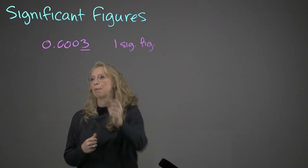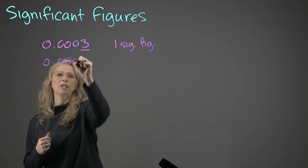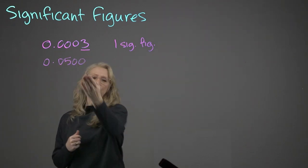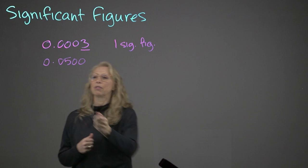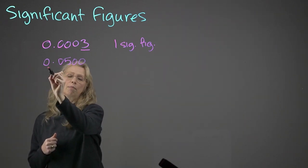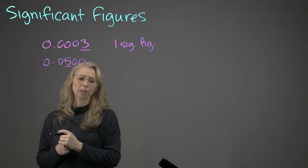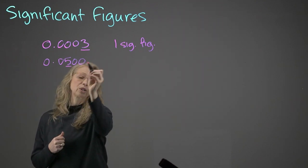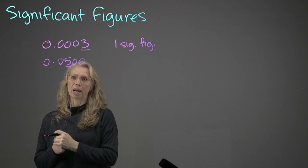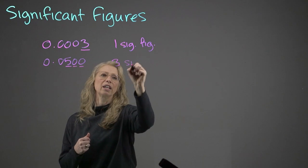What about another example? 0.0500. Now we have leading zeros and we have trailing zeros. The leading zeros, again, they don't count, and we move along across the number until we get to our first non-zero number, and then we actually start counting the zeros to the right. So in this case, we have three sig figs.